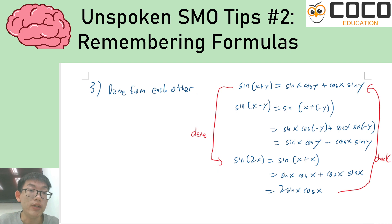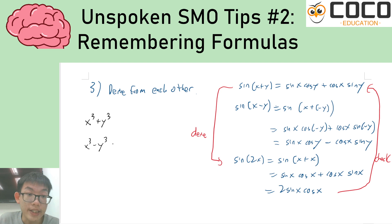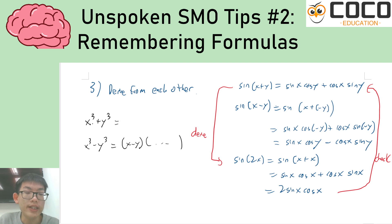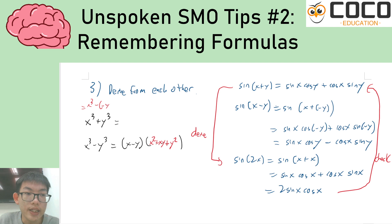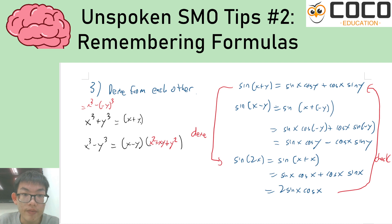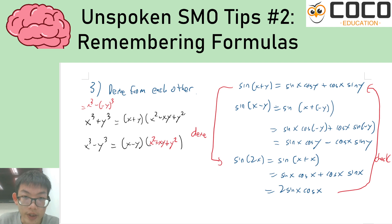Similarly, the double angle formula sin(2x) is just sin(x+x), which you can plug into the compound angle formula to get sin x cos x plus cos x sin x, giving two sin x cos x. So you can use the compound angle formula to derive the double angle formula, or use the double angle formula to check the compound angle formula. A similar approach works for algebraic identities: if you remembered that x cubed minus y cubed equals x minus y times something, you can fill in the blank via long division, then get x cubed plus y cubed by replacing y with negative y, giving x plus y times x squared minus xy plus y squared.